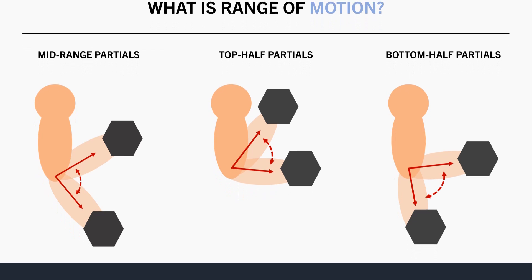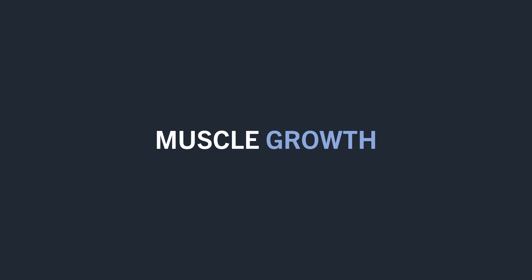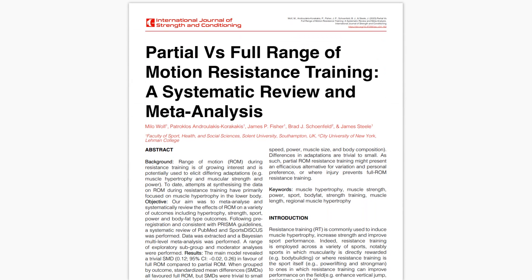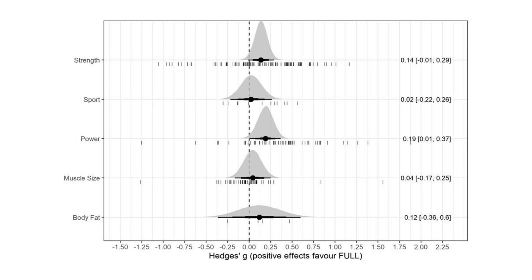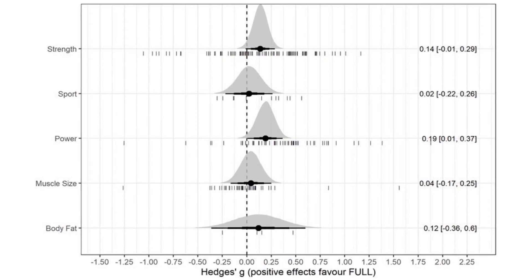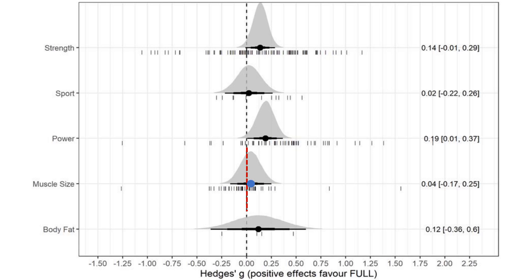So what range of motion should we train with? First let's look at the influence of range of motion on muscle growth. The best evidence we have on this topic is this meta-analysis. The analysis included studies which compared training with a full range of motion versus any form of partial range of motion with the same exercise. Overall, it was found that there was a trend favouring full range of motion over partial range of motion, but the differences were marginal.